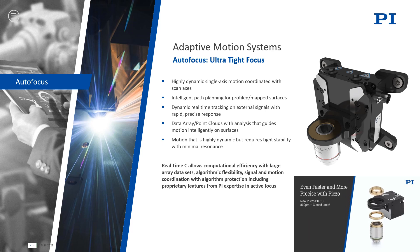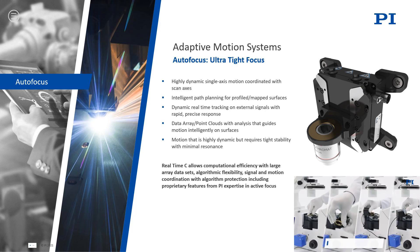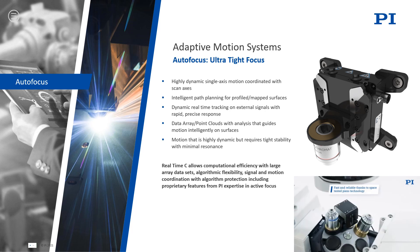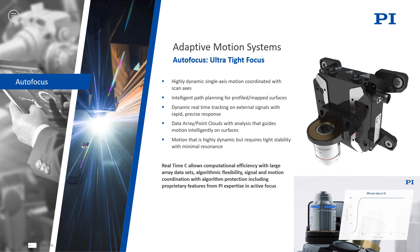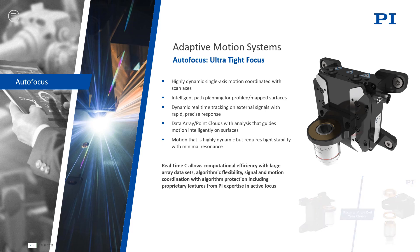A real-time C development to address these autofocus methods and signals, much like force signals, can be done in libraries and executed time-wise deterministically with good computational flexibility on the controller — without any communication bus latency. What's especially advantageous about using ACS controls for autofocus is that a number of features have been developed for this common application at ACS, which real-time C can talk to and work with to provide an extra layer of pre-existing capability. This really provides the best of all worlds in terms of real-time C, pre-existing ACS capability, and stages like the V-308 at PI.